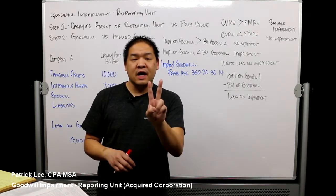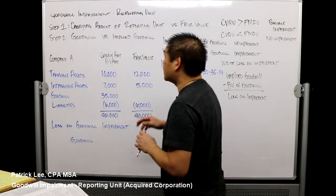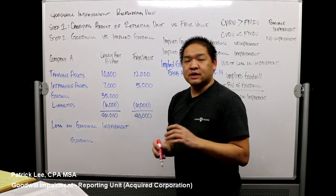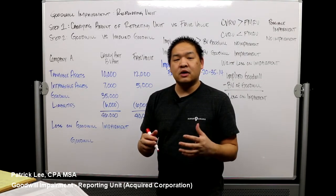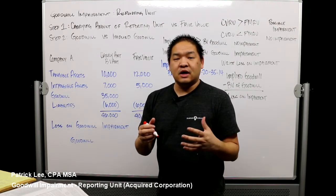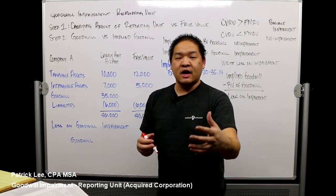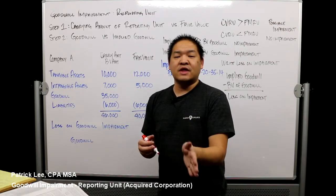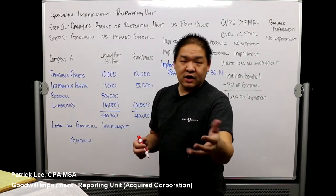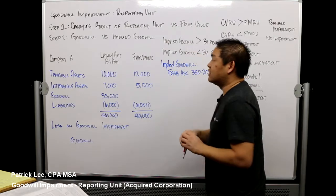There are two steps to impairment of goodwill. Step one is we're going to look at the carrying amount of the reporting unit — what are we carrying that company on our books? That is typically the fair value at the date of acquisition, also called book value. We're going to look at that against the fair value.